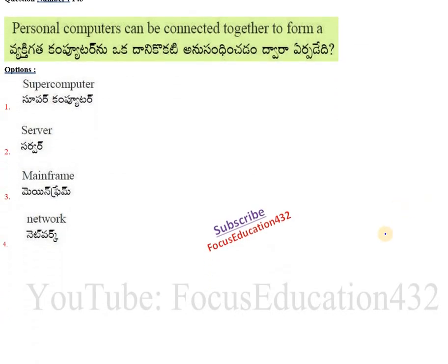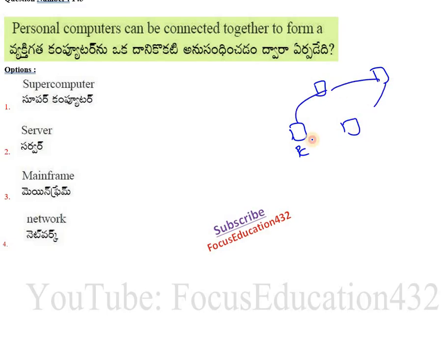Next question: personal computers can be connected together to form what? If you have one personal computer or laptop and another personal computer, you can connect them to form a network. A network is a combination or collection of computers which are connected.